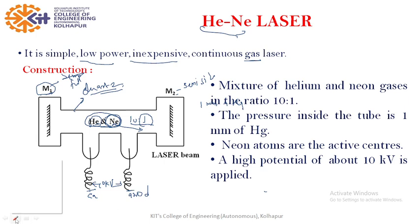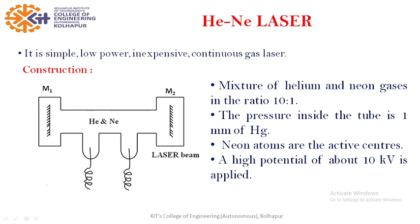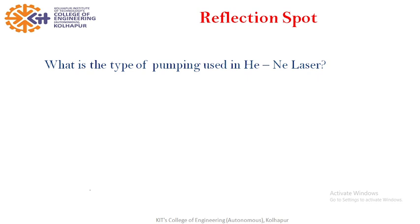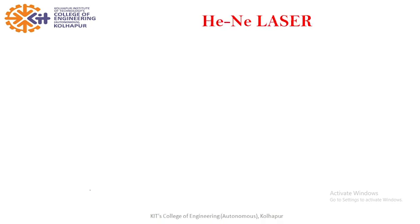Now there is a reflection spot question: we have electrodes and we apply a potential of 10 kilovolts — what is the type of pumping used in this Helium-Neon laser? You may pause the video and answer. I hope you answered; I will not give the answer directly, but I have given it indirectly in the explanation of construction.